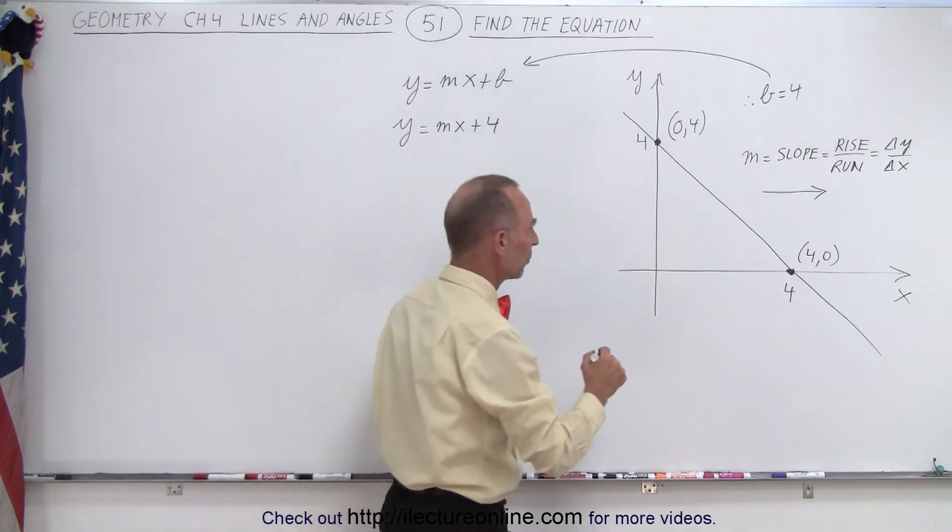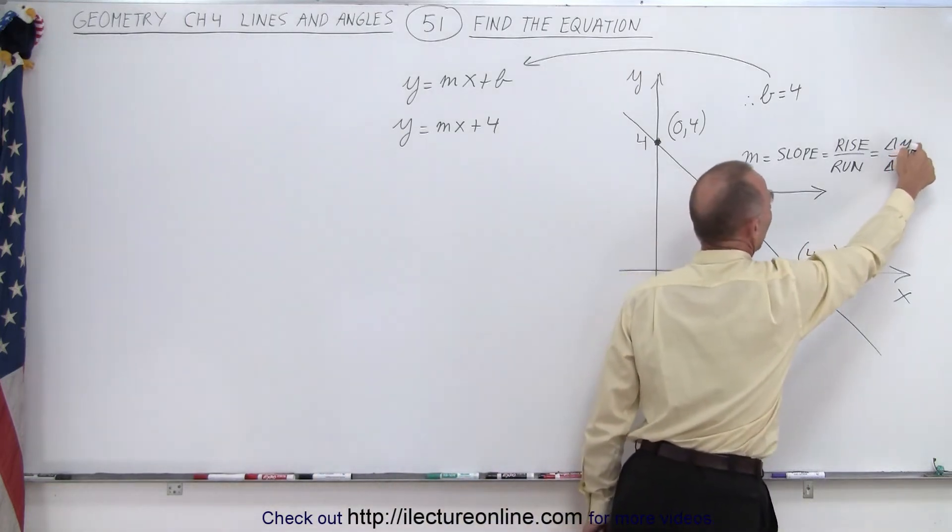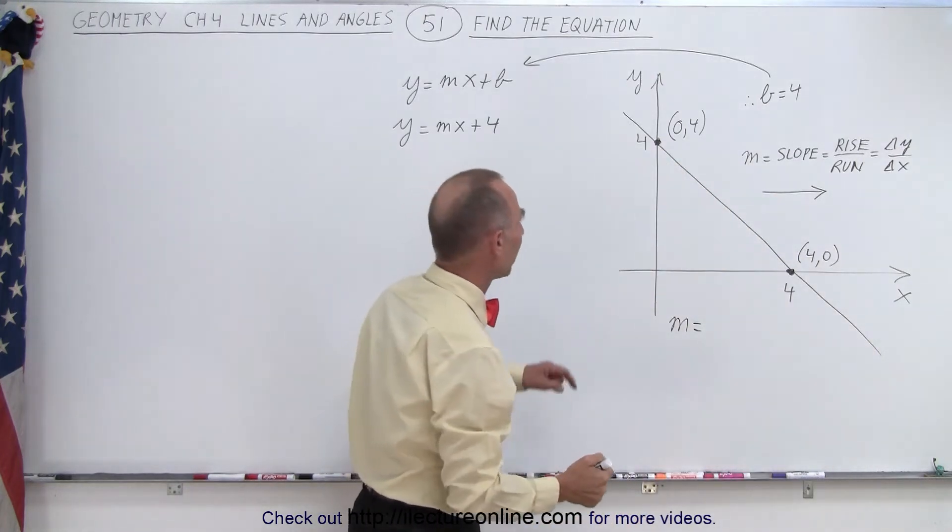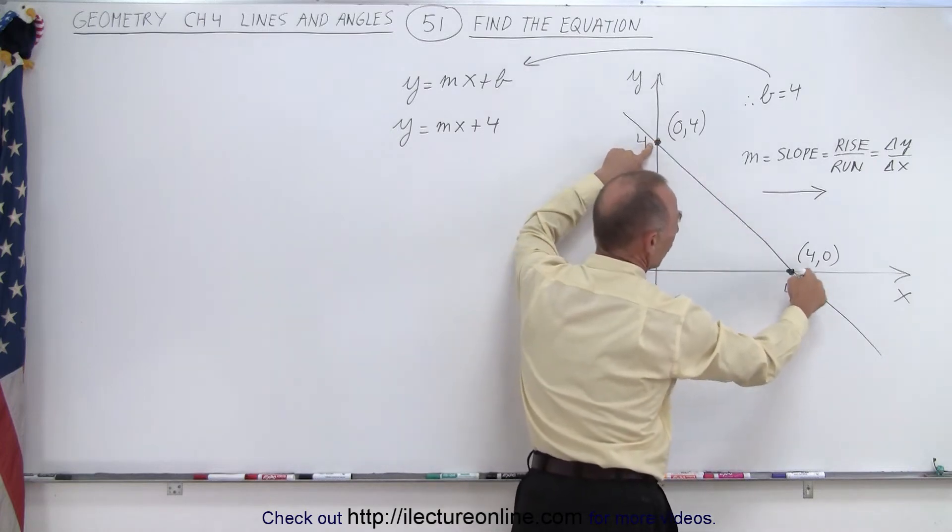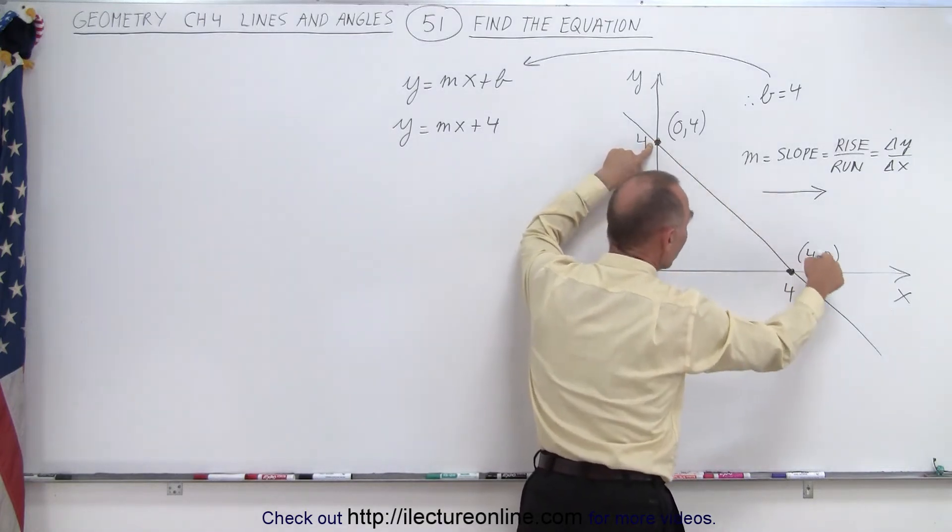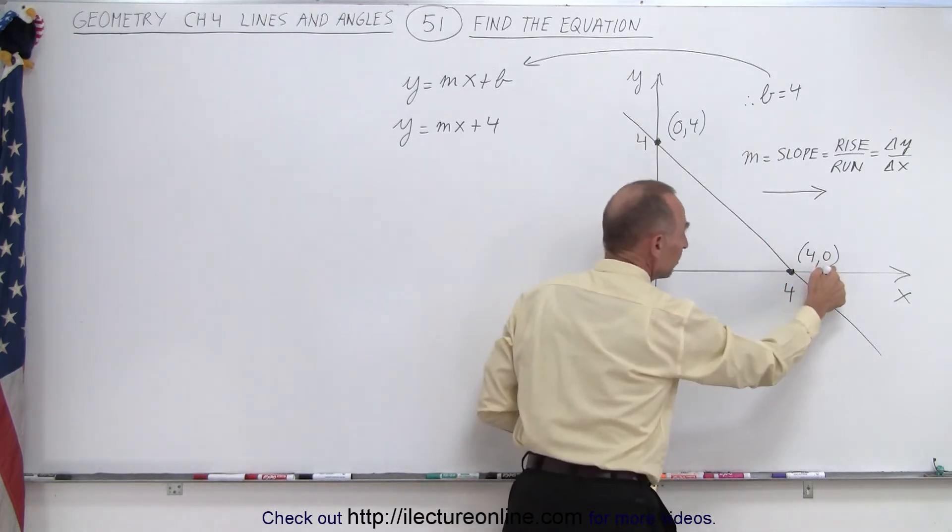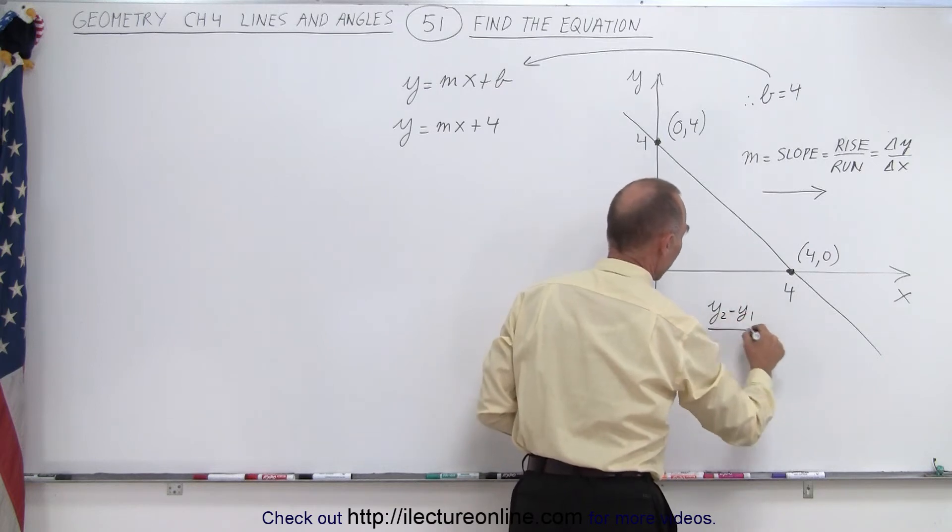So therefore we can write that the slope is equal to the change in y. The change in y is the change in the vertical direction. I started at y equals 4 here, and at the other point y equals 0. So the change is from 4 to 0, or the second point minus the first point. So I can say that this is y2 minus y1 divided by x2 minus x1.